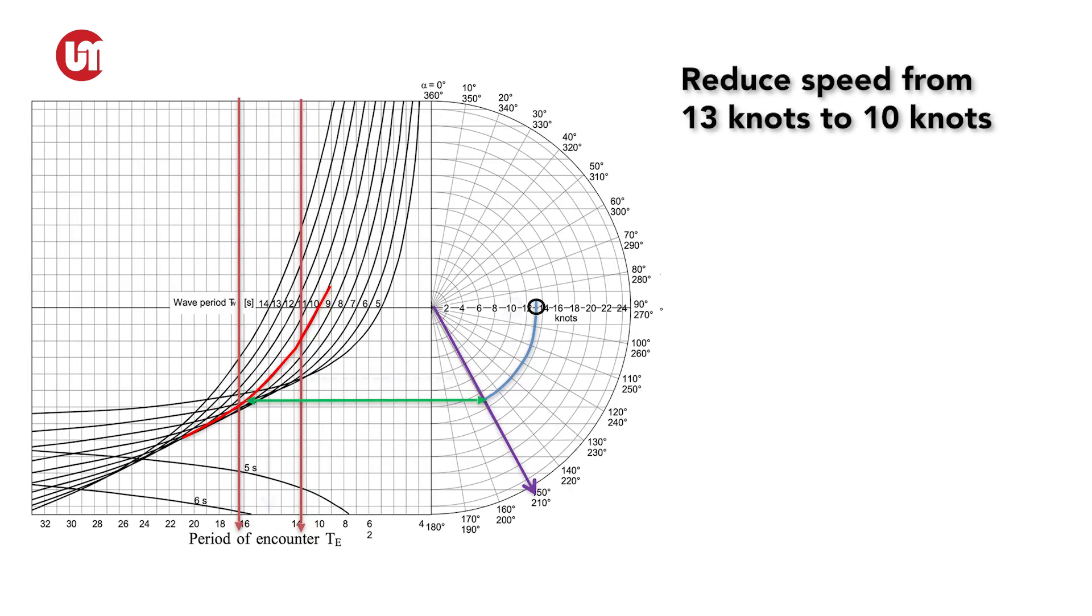The ship can reduce speed to 10 knots, but as you can see you are still inside the danger zone. So you see, reducing your speed is not always the solution.